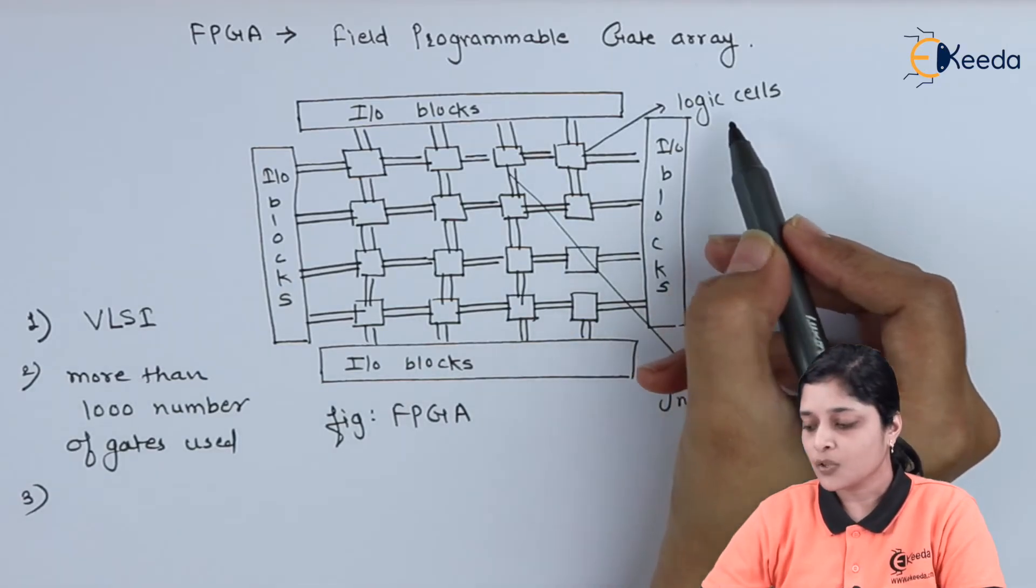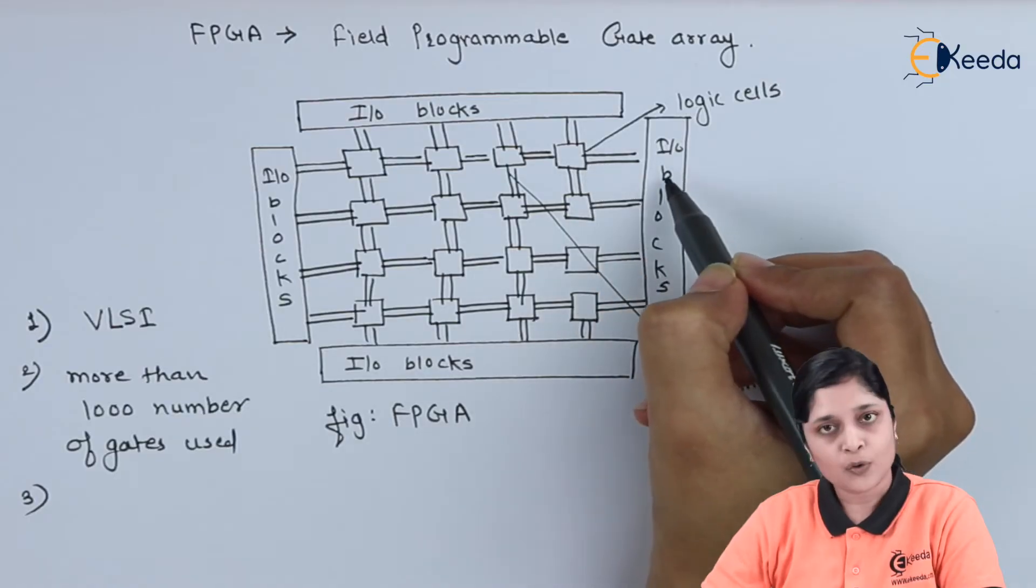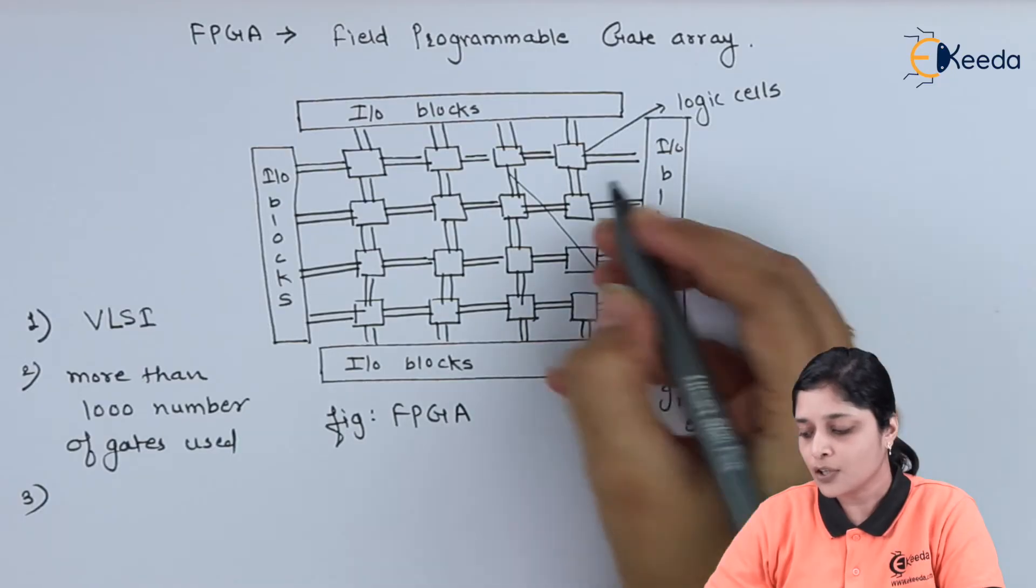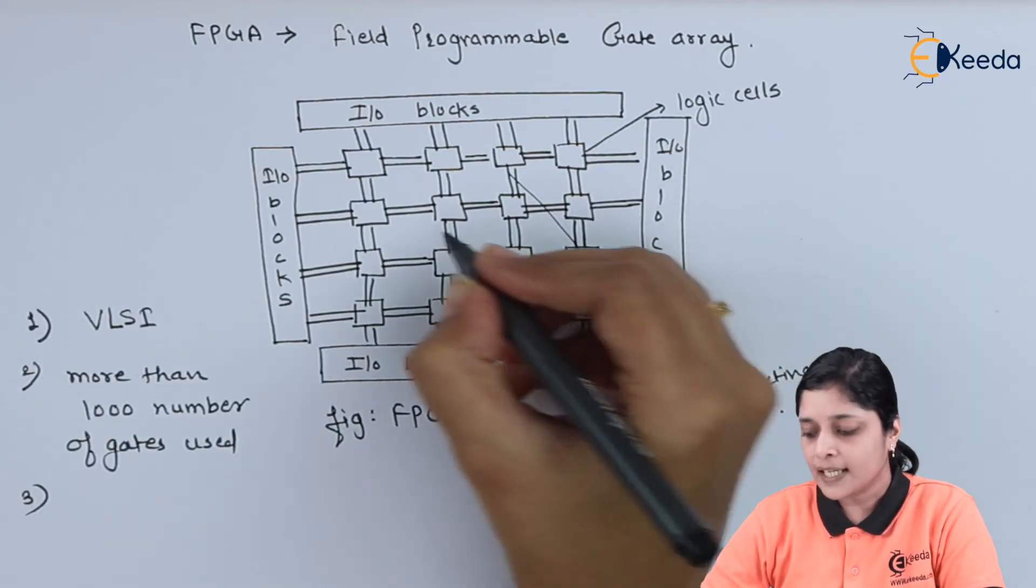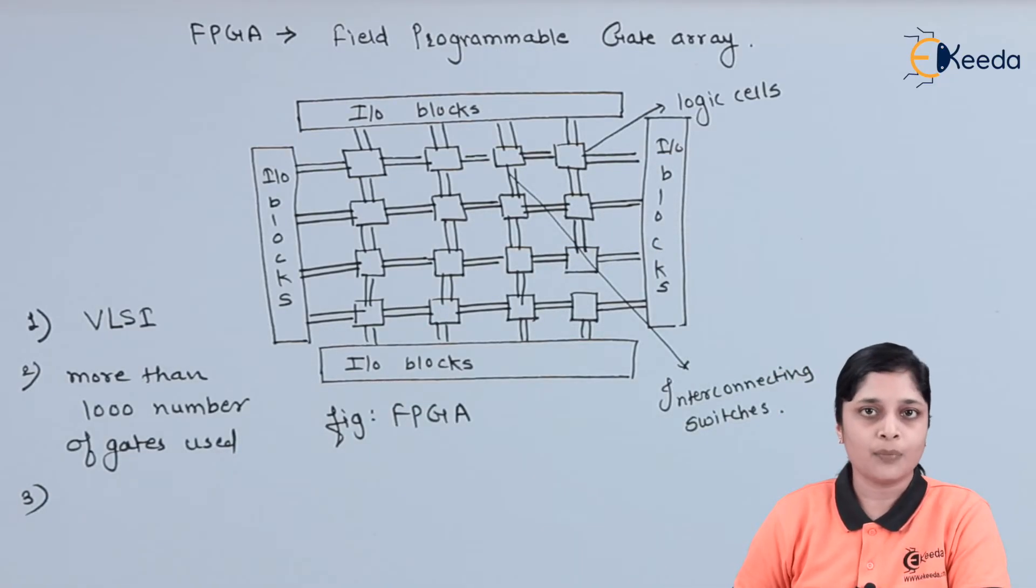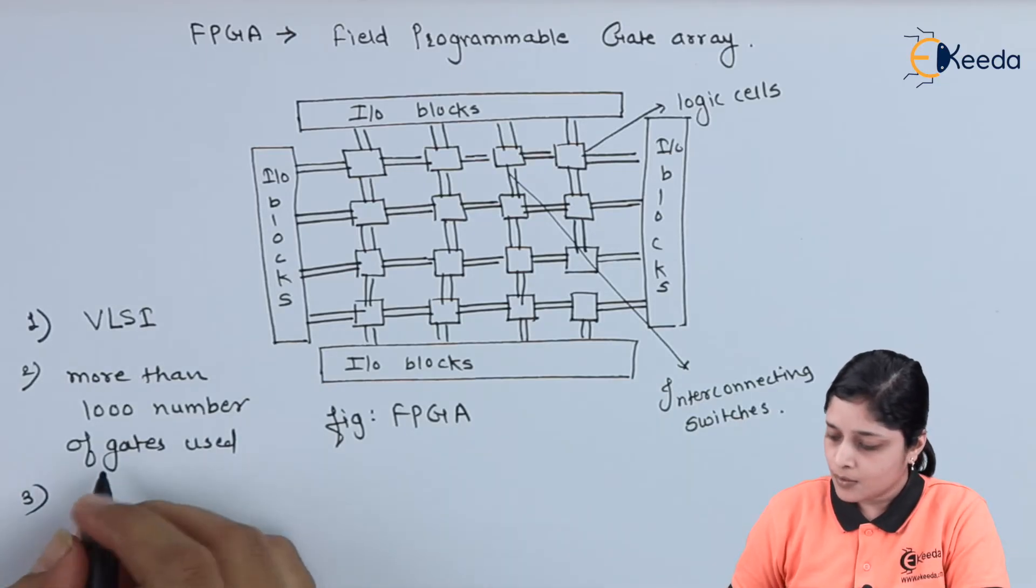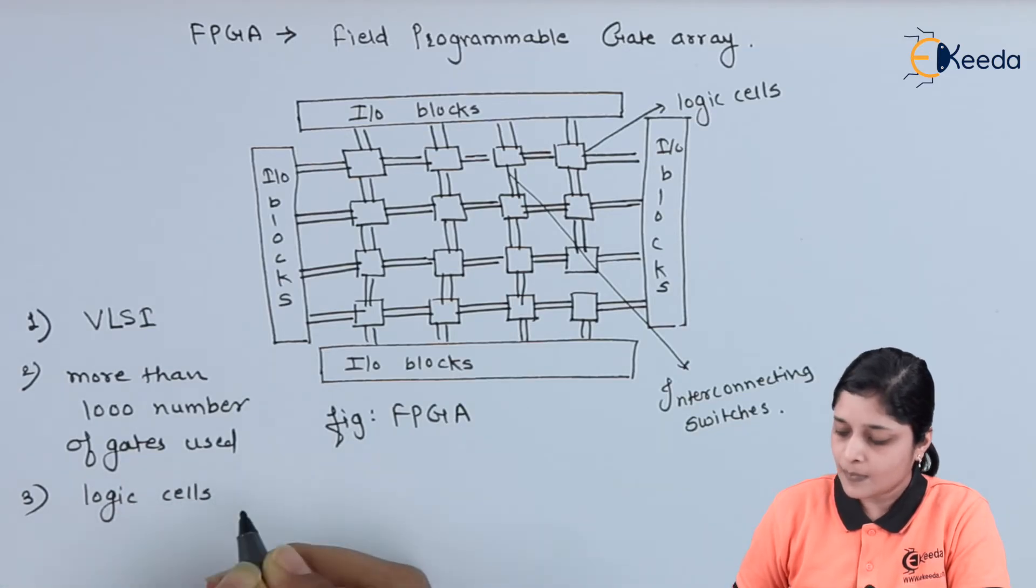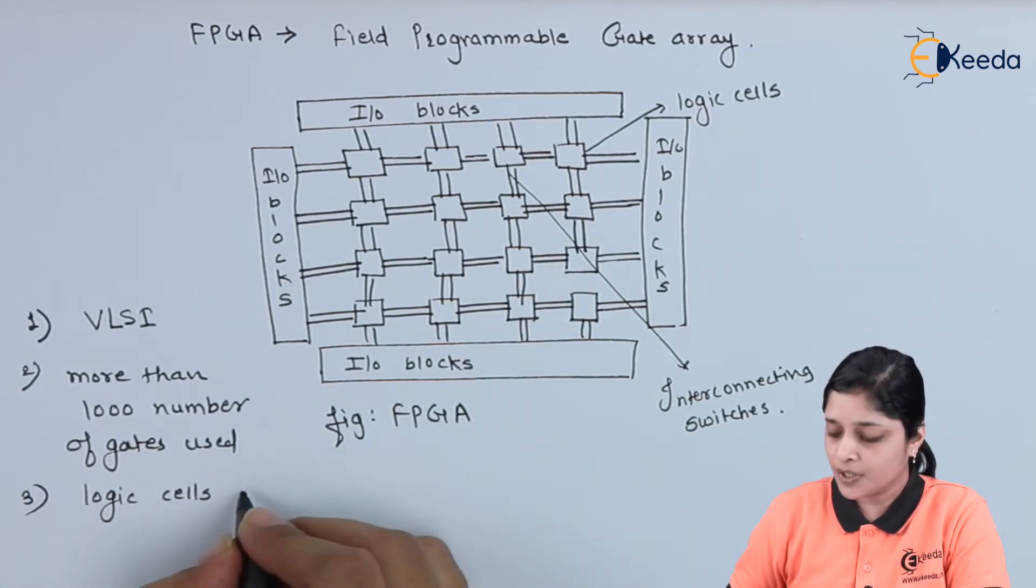The interconnection between logic cells and IO block is programmable. Also interconnection switches are used for interconnecting each and every block to get the desired output. So logic cells and interconnection between them is programmable.